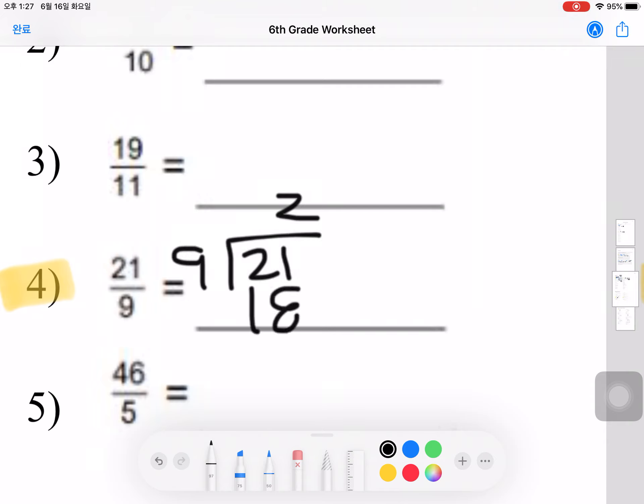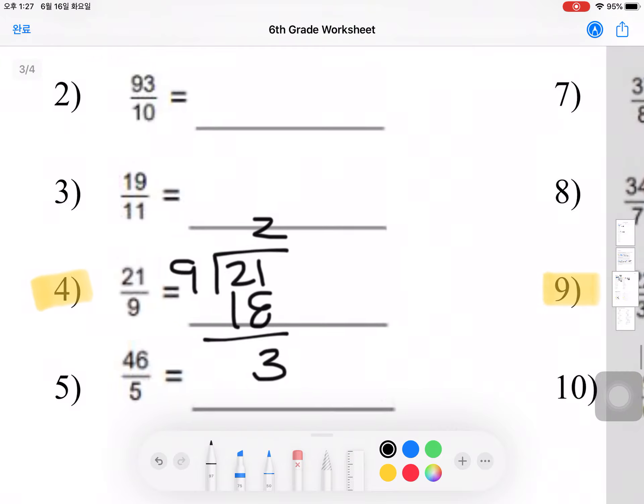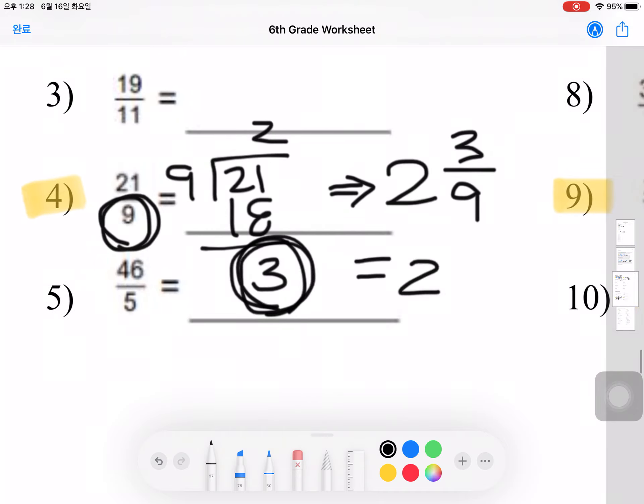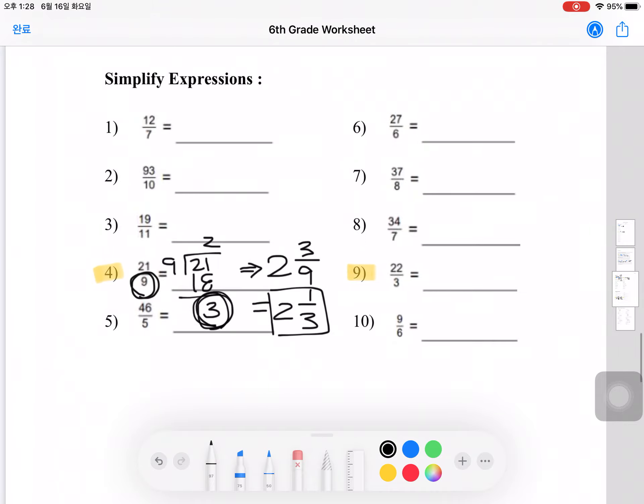It goes in 2 times. 21 minus 18 is 3. So we can see that there's a remainder of 3. Basically, how you want to write this equation is, it goes in 2 times, so 2. And then this number over what was already in the denominator. So 3 over 9. We can simplify that to 1 over 3. So that would be your final answer: 2 and 1/3.